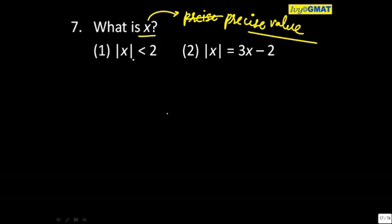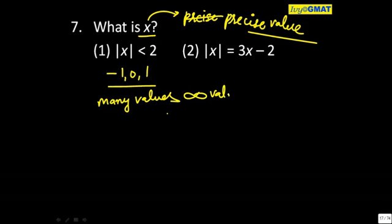Mod of x less than 2 can be satisfied by x equals minus 1, also 0, also 1, also etc. So many values. Actually, infinite values will satisfy. It's a range. Whenever there is a range, infinite values will satisfy—decimals and so on. So the first statement alone is not enough.